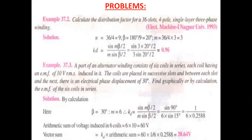Beta (β) is the angle between adjacent slots. The formula is β = 180°/N. With N = 9, β = 180/9 = 20°. So the difference between each slot is 20 degrees. Every slot in the armature contains copper conductors distributed in round slots throughout the circular armature.